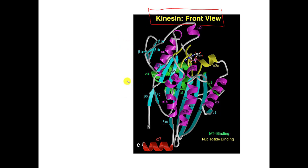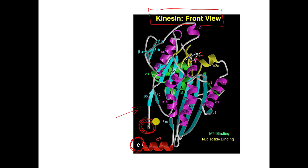I don't want you to get lost in the details, but there are some things to note: there's an N and a C here — you probably know what those mean. This is one end where the amino acids start getting connected to each other, this is the other end. For this particular molecule, when it's folded up properly, the N-terminus and the C-terminus end up being close to each other. And there are all sorts of weird little shapes — there's this spiral here, there are all these spirals, there are other things. This is just to show you an example of how complicated the 3D shape can be for a protein molecule.